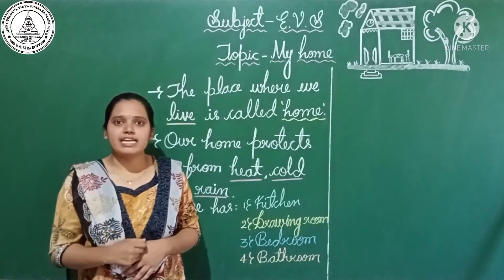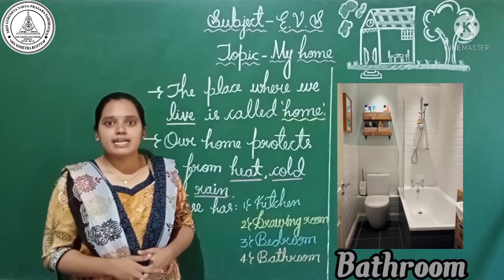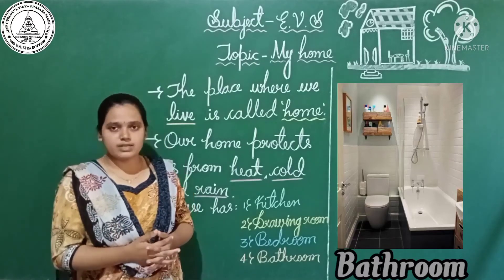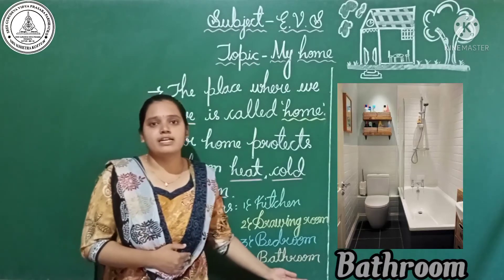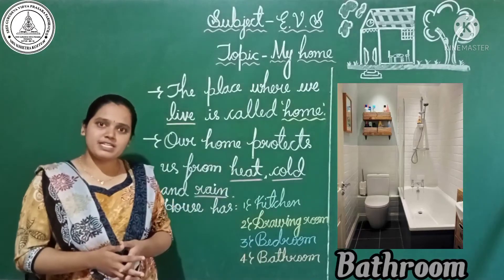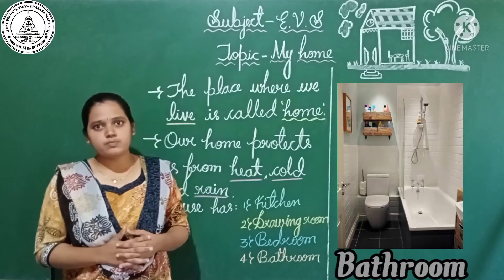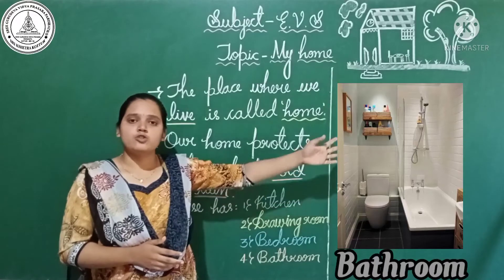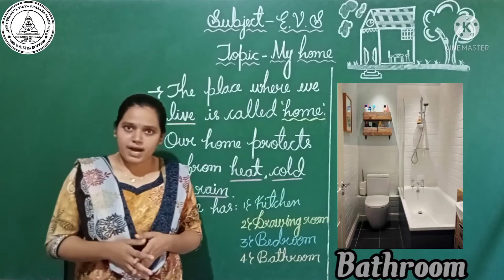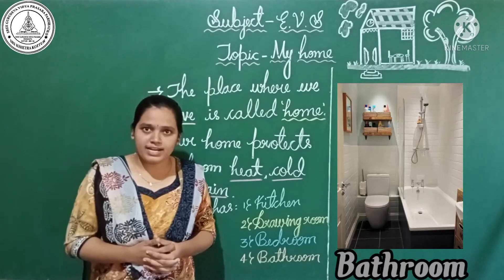Now let us move on to the fourth room, that is the bathroom. The bathroom is a room where we get our body clean — where we take a bath, get a face wash, or hand wash. See the picture of the bathroom. What things are present? Buckets, soaps, brushes, and taps. These are all the things present in the bathroom. To get our body clean, we need a bathroom.